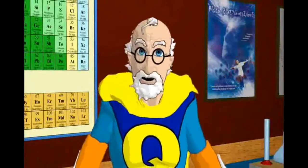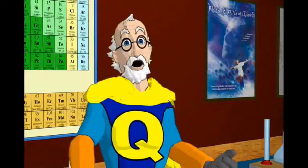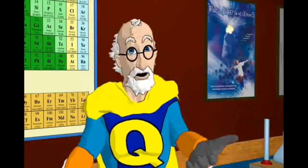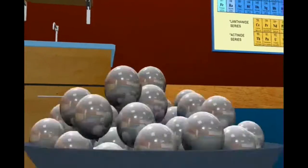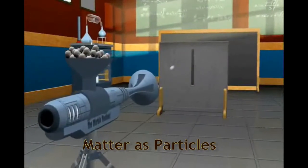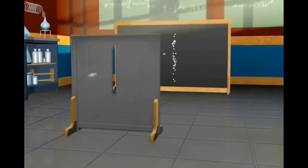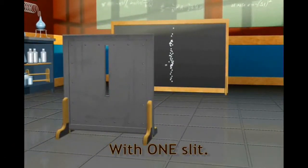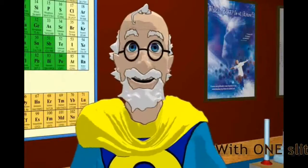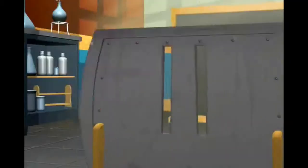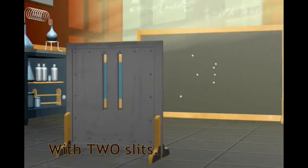To understand this experiment, we first need to see how particles, or little balls of matter, act. If we randomly shoot a small object, say a marble, at the screen, we see a pattern on the back wall where they went through the slit and hit. Now, if we add a second slit, we would expect to see a second band duplicated to the right.